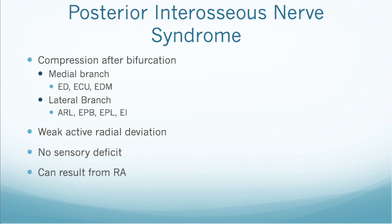The third condition is posterior interosseous nerve syndrome. After the radial nerve goes through the supinator muscle, it emerges as the posterior interosseous nerve, which then bifurcates into a medial and lateral branch. Compression can occur before or after this bifurcation. If it occurs after on the medial branch, certain muscles are affected, and if it occurs after the bifurcation on the lateral branch, other muscles are affected, as listed here. If the compression occurs before the nerve splits, then all of those muscles are affected.